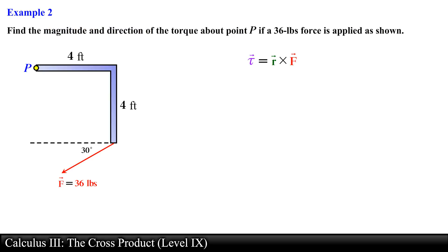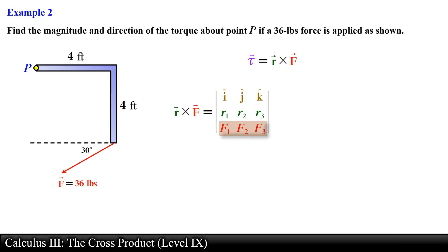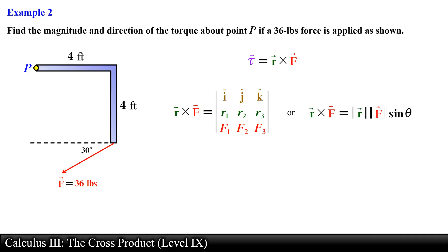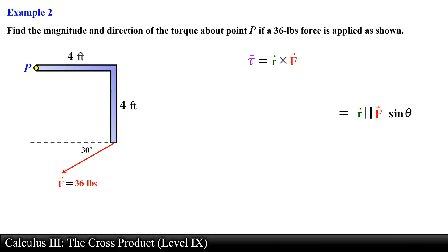We need to use the definition of torque to find both the magnitude and direction. Once again we have two distinct ways to solve this problem: we can find the components of R and F and use the component definition with a determinant, or we can use the geometric definition and multiply the magnitudes of R and F by the sine of the angle between them. Let's solve this problem by using the geometric definition.